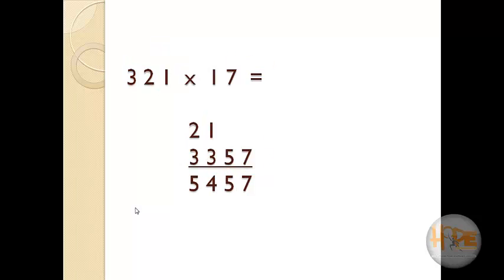Here multiply 321 with 17. 3 is as it is, 7 is as it is. So 3 into 7 is equal to 21, and then add into next digit.